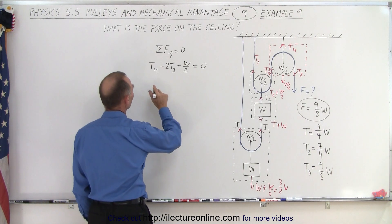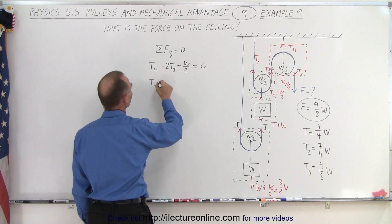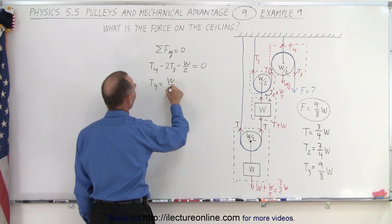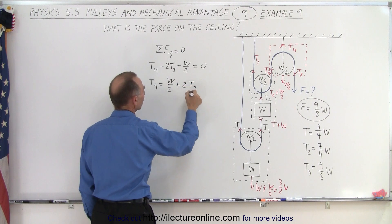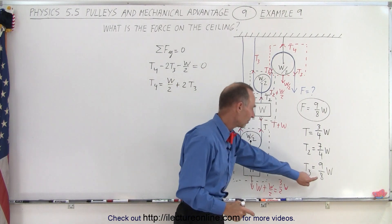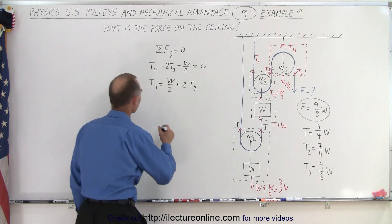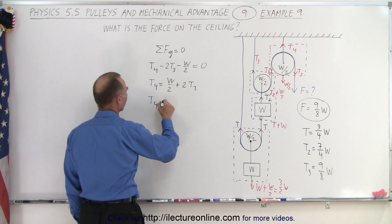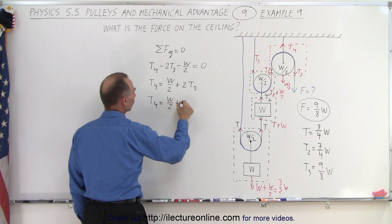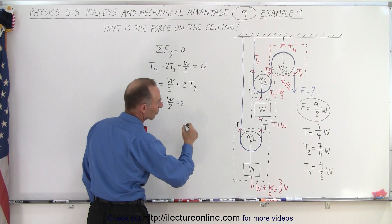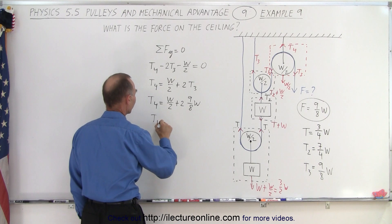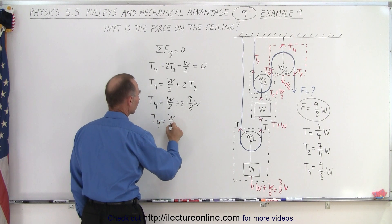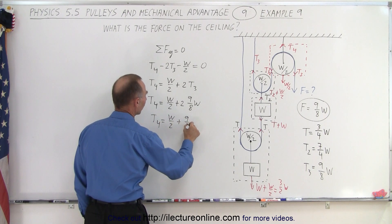All right, that tells us that T4 is going to be equal to half a W, plus two times T3. Now T3 was discovered last time to be 9/8 W. So that means T4 is equal to W divided by 2, plus 9 over 4W.